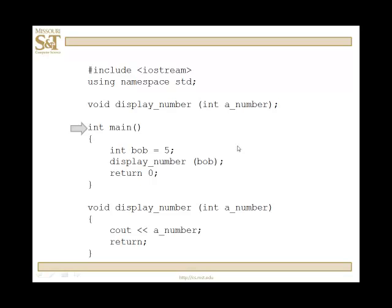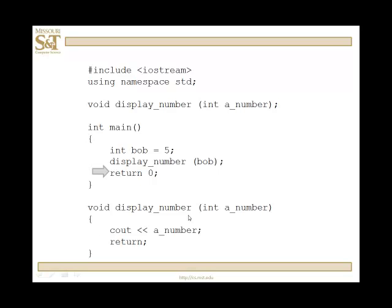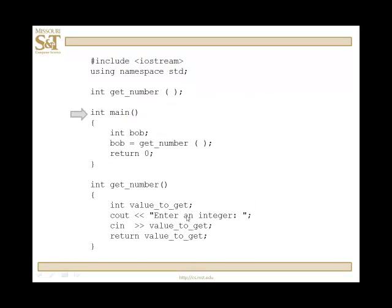Now we go to the execution stage. We start with main. We create an integer variable called Bob and give it a value of five. We execute the function call. At this point, the value of Bob — which is five — is copied into the parameter 'number'. Control passes down to the function, number takes on the value five, that's output, we hit the return, and that takes us back up to the statement just after the function call — which in this case is return zero. That is the end of that example.